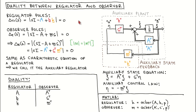We start by writing down the characteristic equations of the regulator and the observer. The characteristic equation for the regulator is given by the determinant of SI minus A plus B times K equal to 0, where K is the state feedback gain. The solutions to this equation are the closed loop poles.